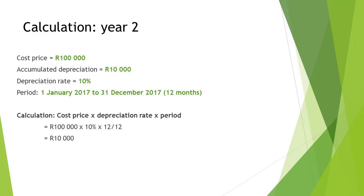Therefore, to calculate the depreciation for the second year, it is 100,000 Rand cost price times 10% times 12 months divided by 12 months, totaling 10,000 Rand depreciation to be recorded in the second year.